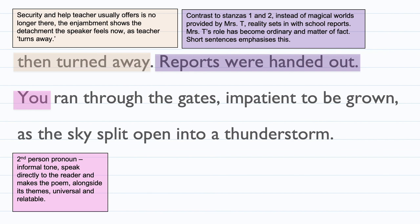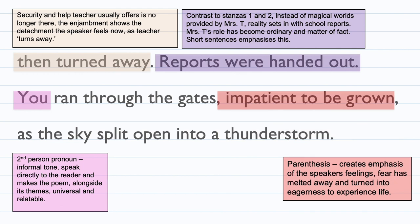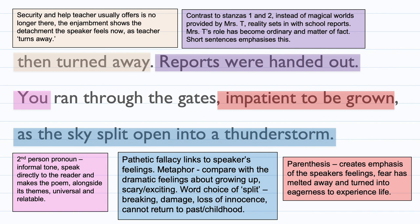'You' again is a second-person pronoun and direct address — it's informal, speaking directly to the reader, making the poem feel universal and relatable. The poetic speaker runs through the gate 'impatient to be grown' — this is parenthesis again, adding extra information into the sentence like a sandwich, creating emphasis on the speaker's feelings. The fear about puberty has melted away and turned into eagerness to experience life. The final line — 'the sky split open into a thunderstorm' — is a second use of pathetic fallacy, comparing the dramatic feelings about growing up. The word choice of 'split' is breaking, damaging; there's a loss of innocence and she can no longer return to her childhood as she grows into a young woman.